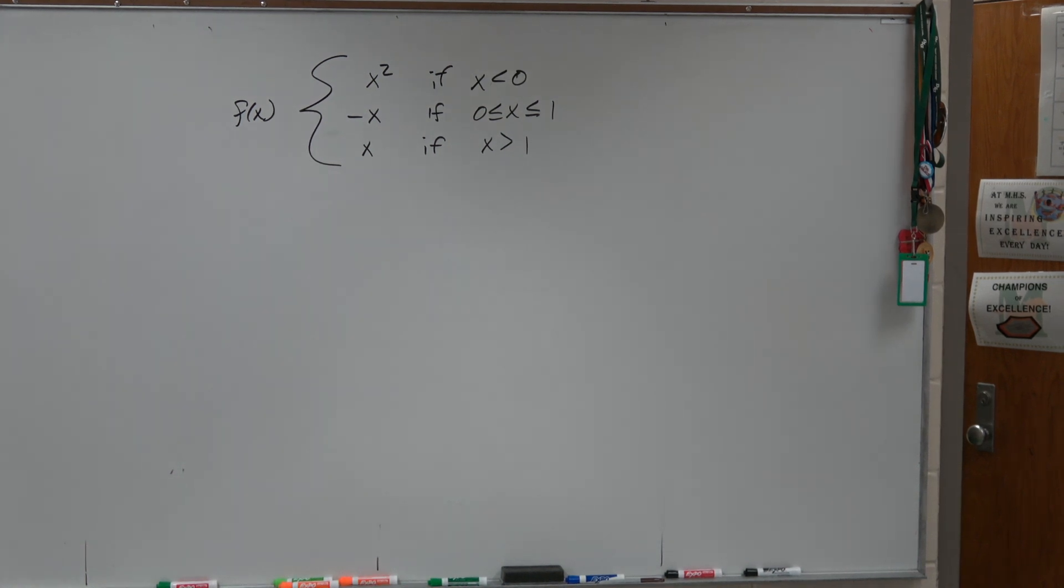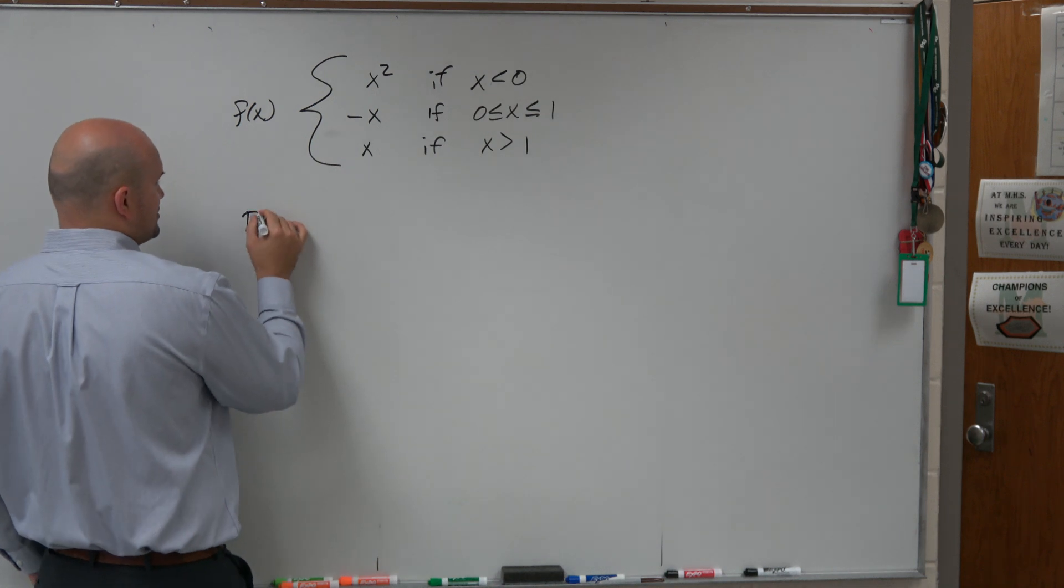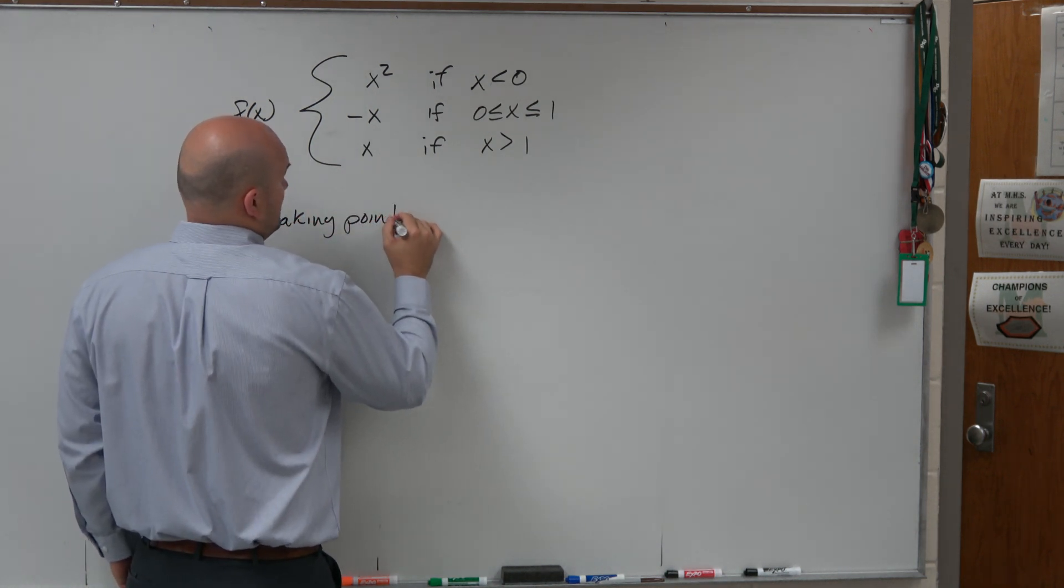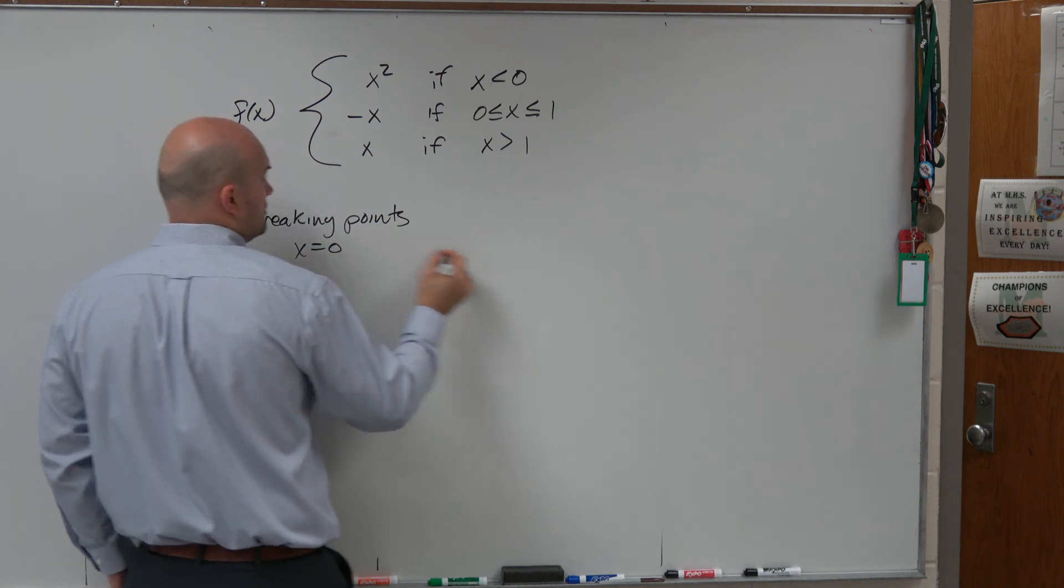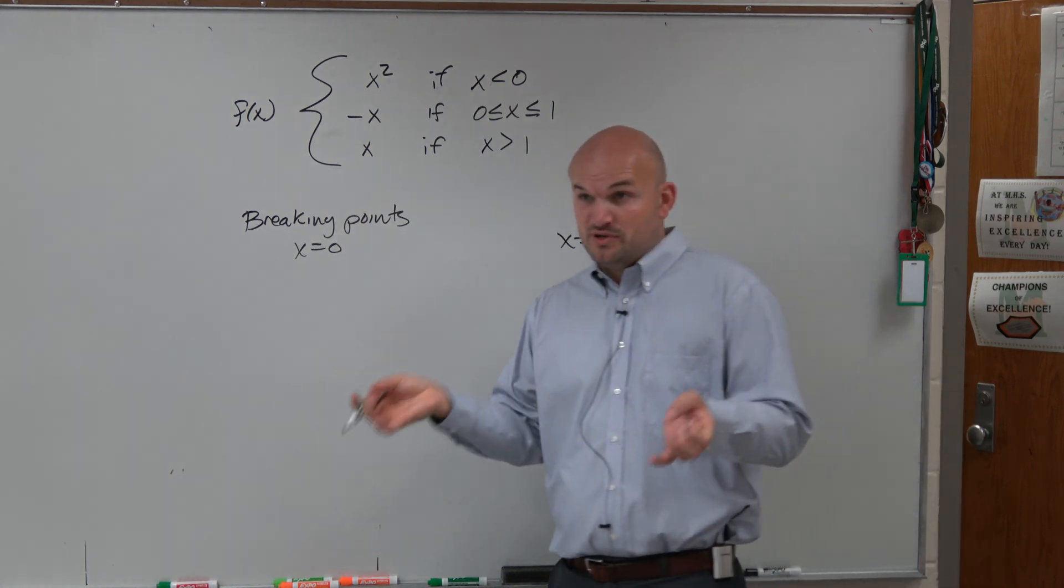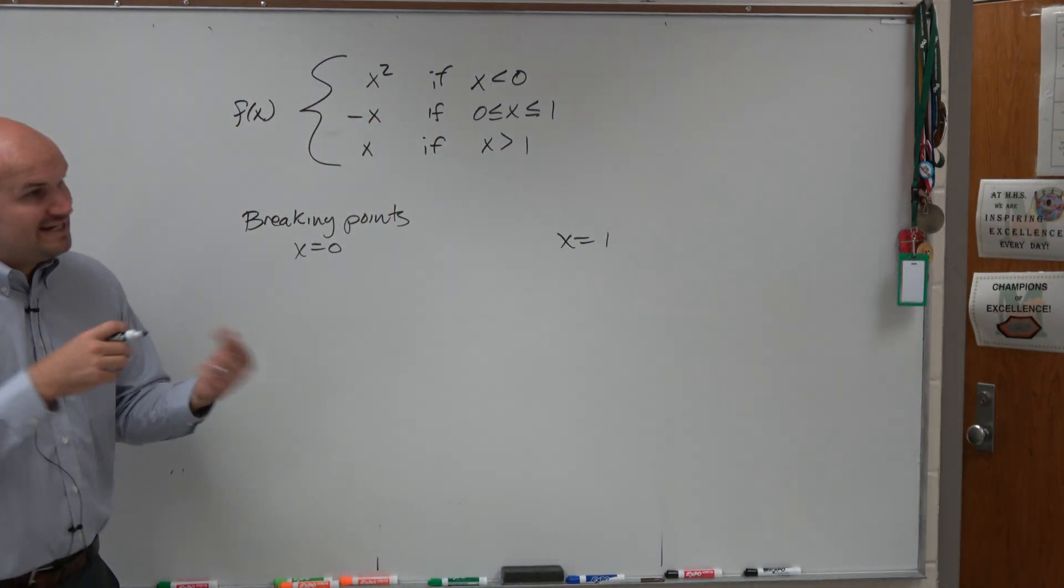If this is continuous or not, there's basically two breaking points. There's two ways that we could be disjunctioned. There's two points where this graph could fall apart or not be continuous, at x equals 0 and x equals 1.